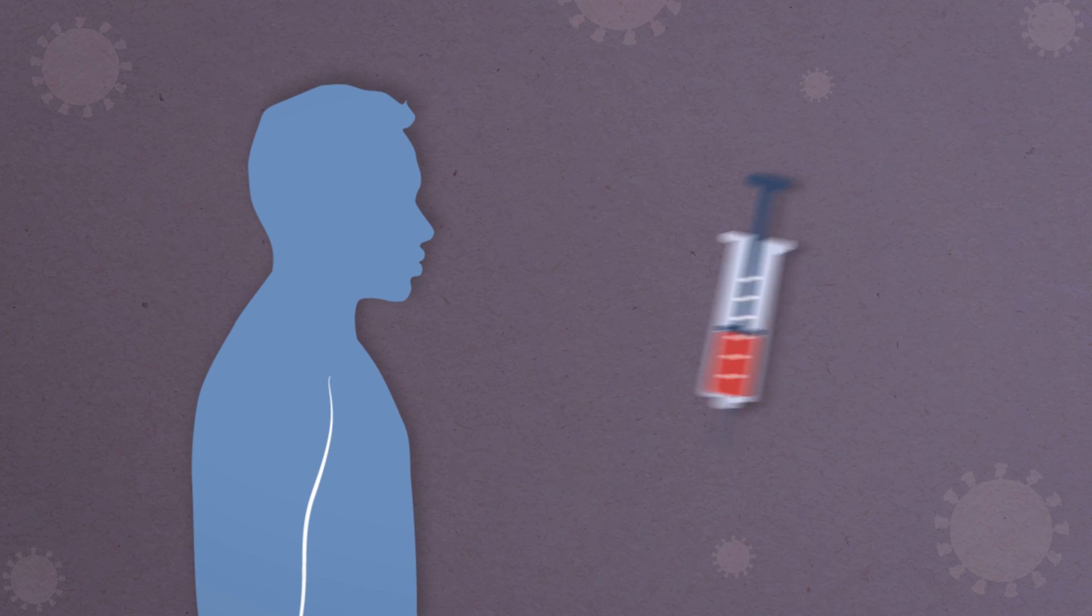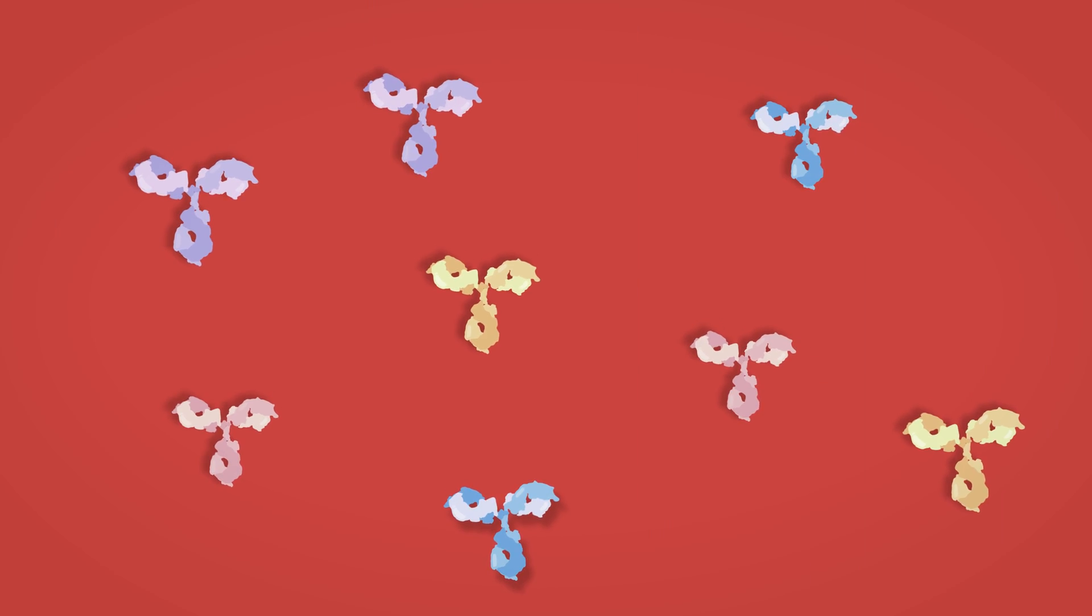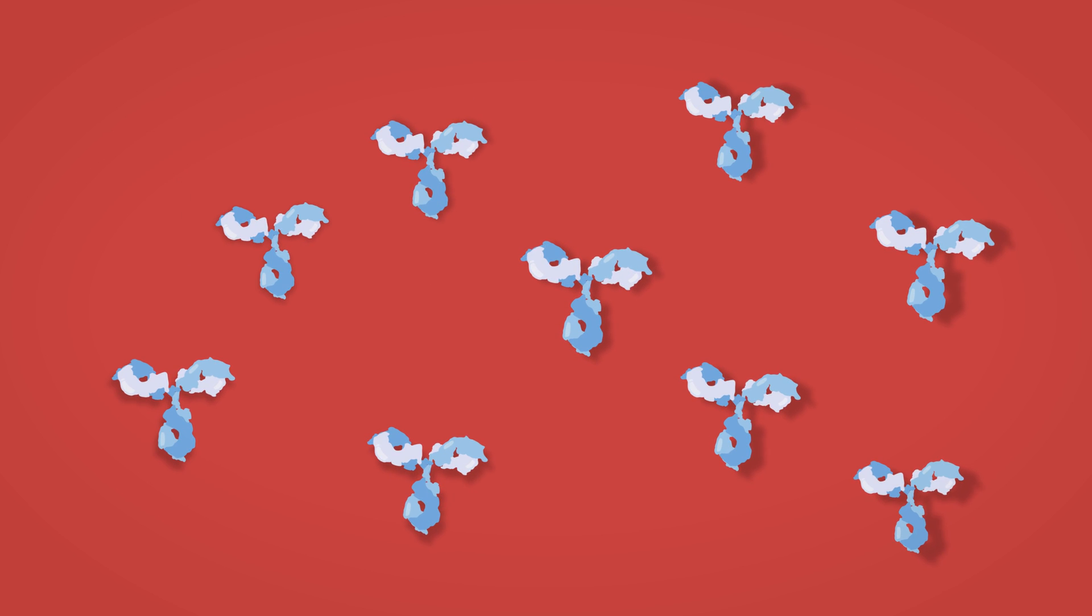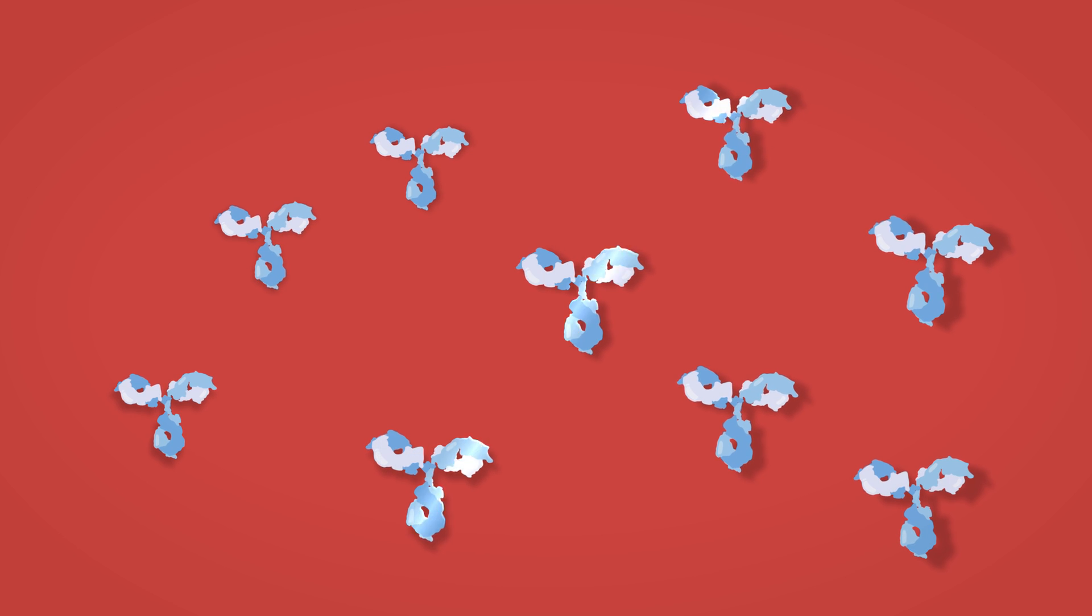One way is to simply transfer possible antibodies present in whole blood, called convalescent plasma. Another way is to isolate a specific antibody with potent antiviral properties and then produce this in bulk in the laboratory. These are known as monoclonal antibodies.